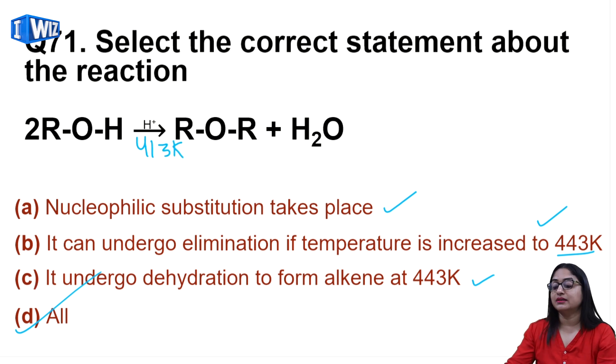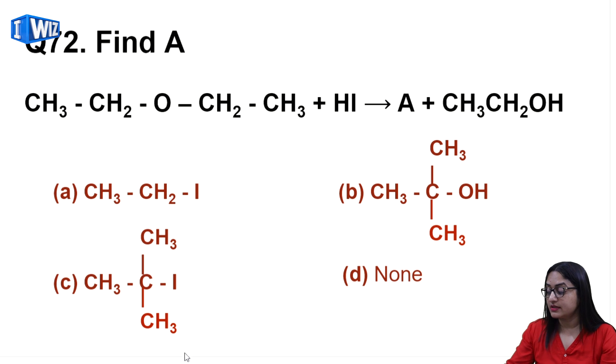Next question: you have ether and you add HI. I-negative will cleave from somewhere to form alkyl halide. Whichever side has oxygen will form alcohol. Among these options, the one forming alkyl halide is A, so A is the correct answer.